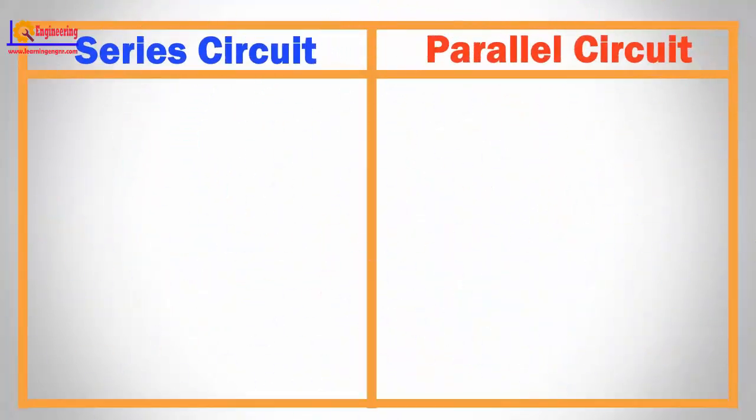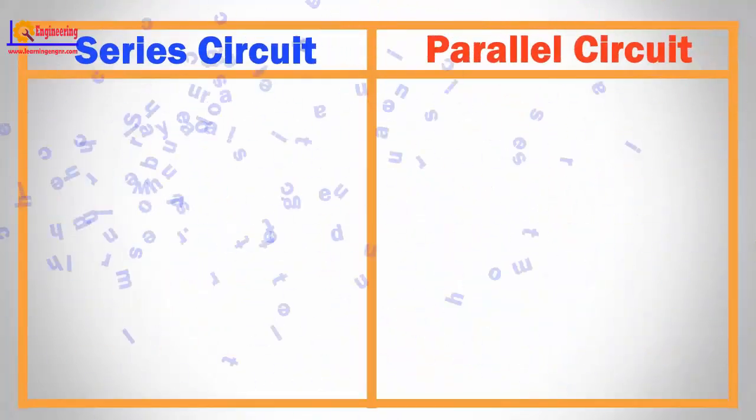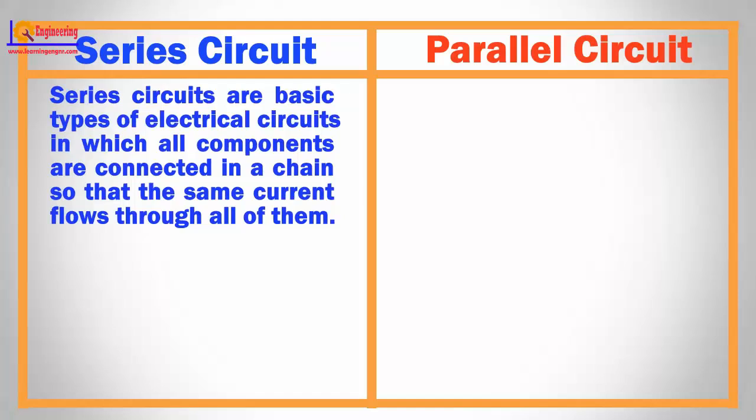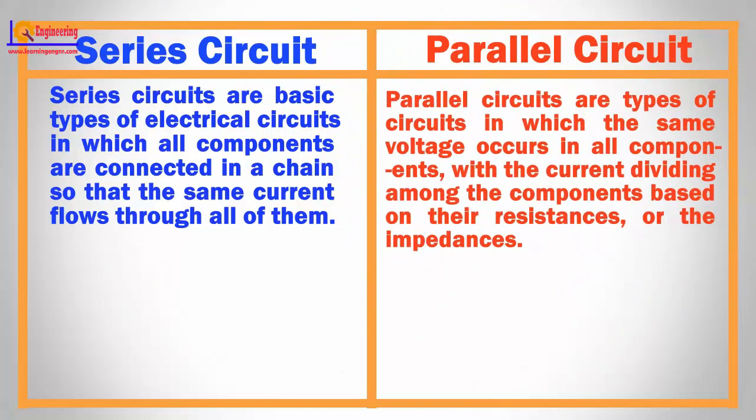Now let's see the difference between series and parallel circuits. Series circuits are basic types of electrical circuits in which all components are connected in a chain so that the same current flows through all of them. Parallel circuits are types of circuits in which the same voltage occurs in all components, with the current dividing among the components based on their resistances or impedances.